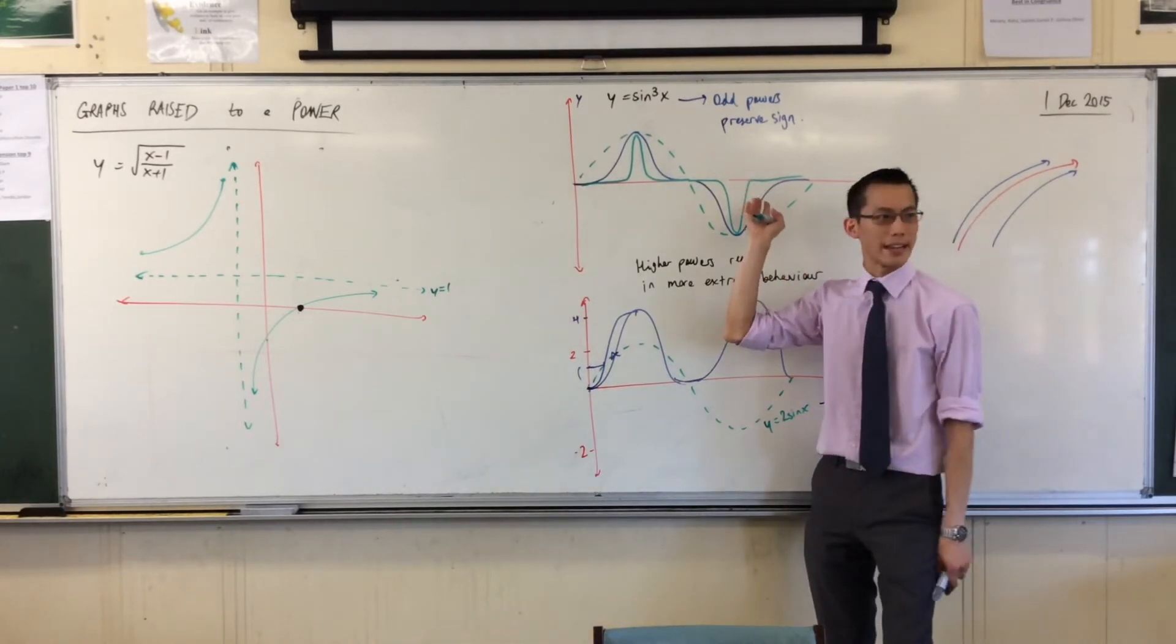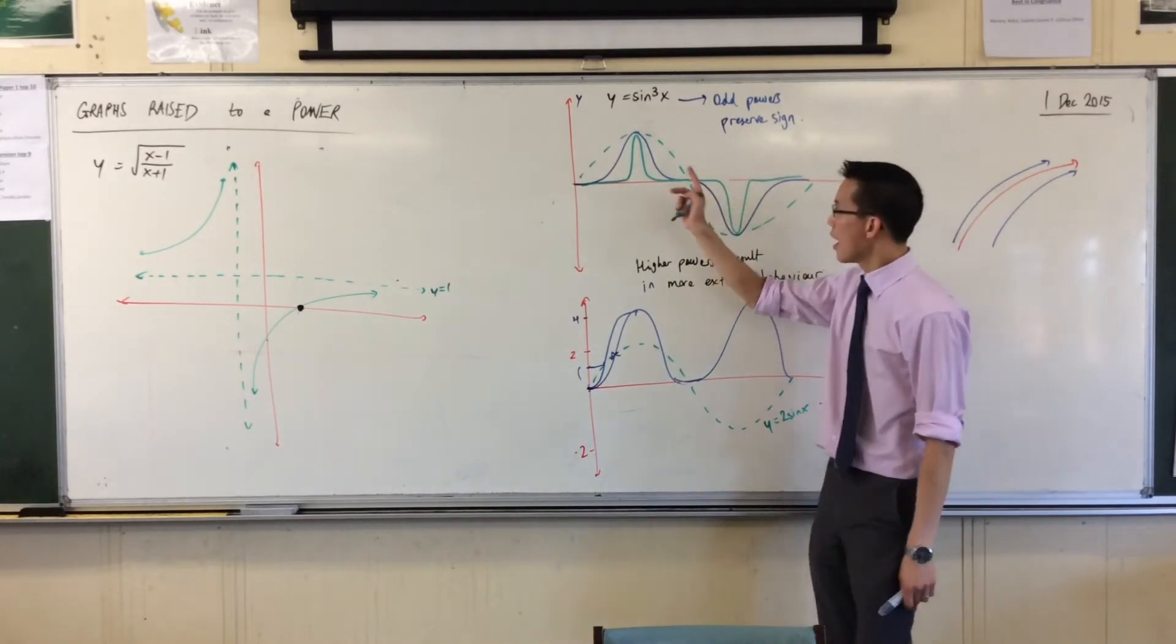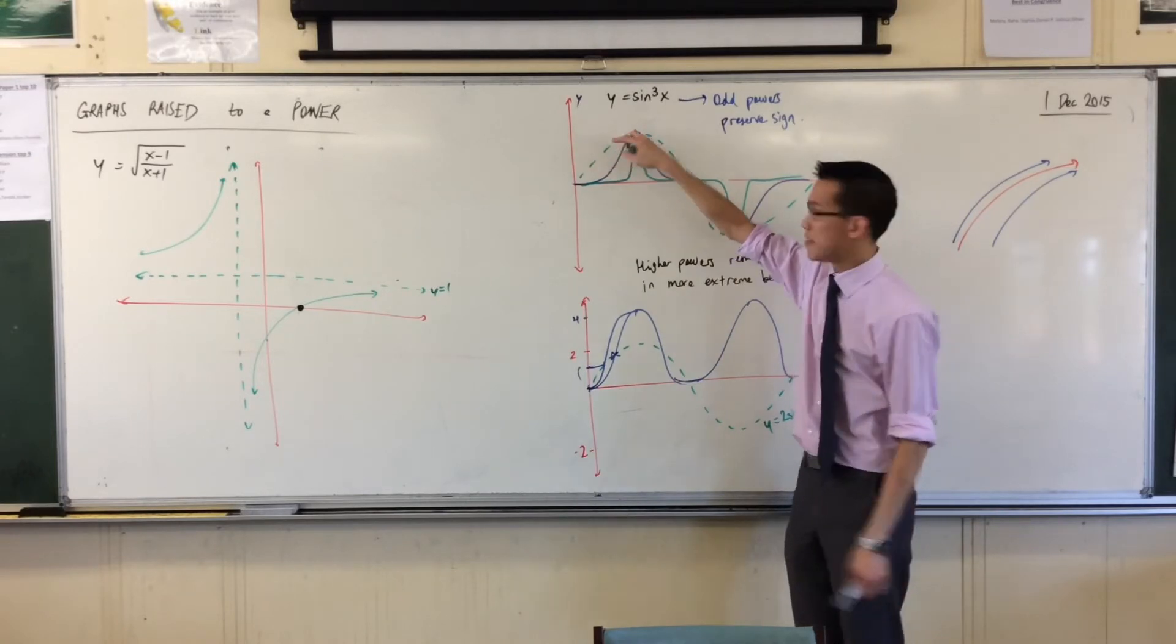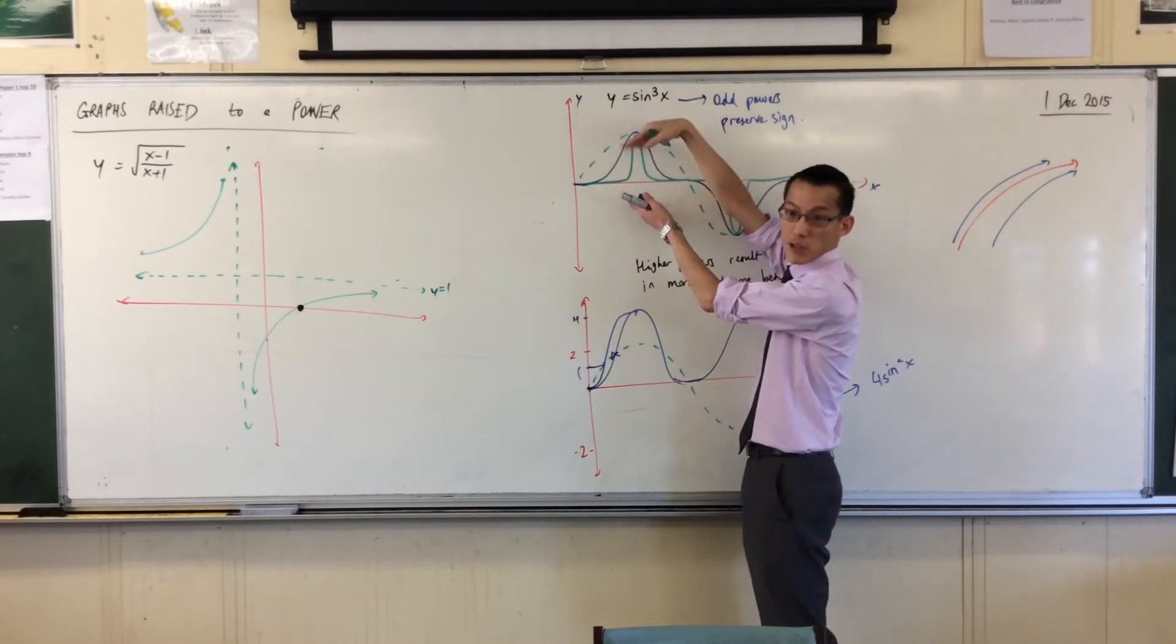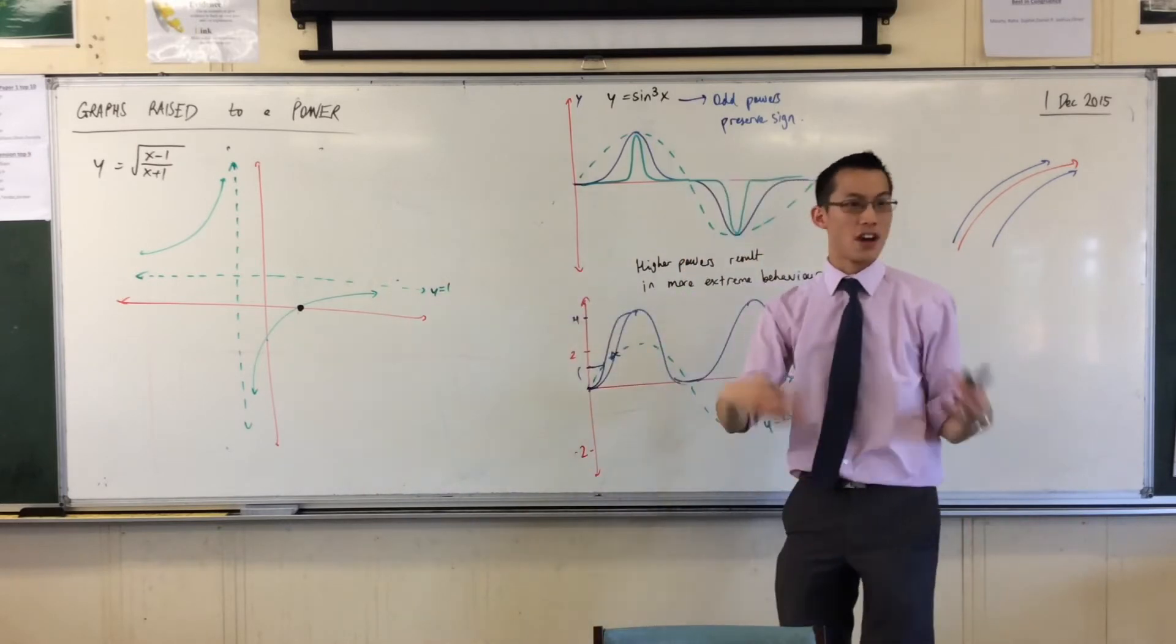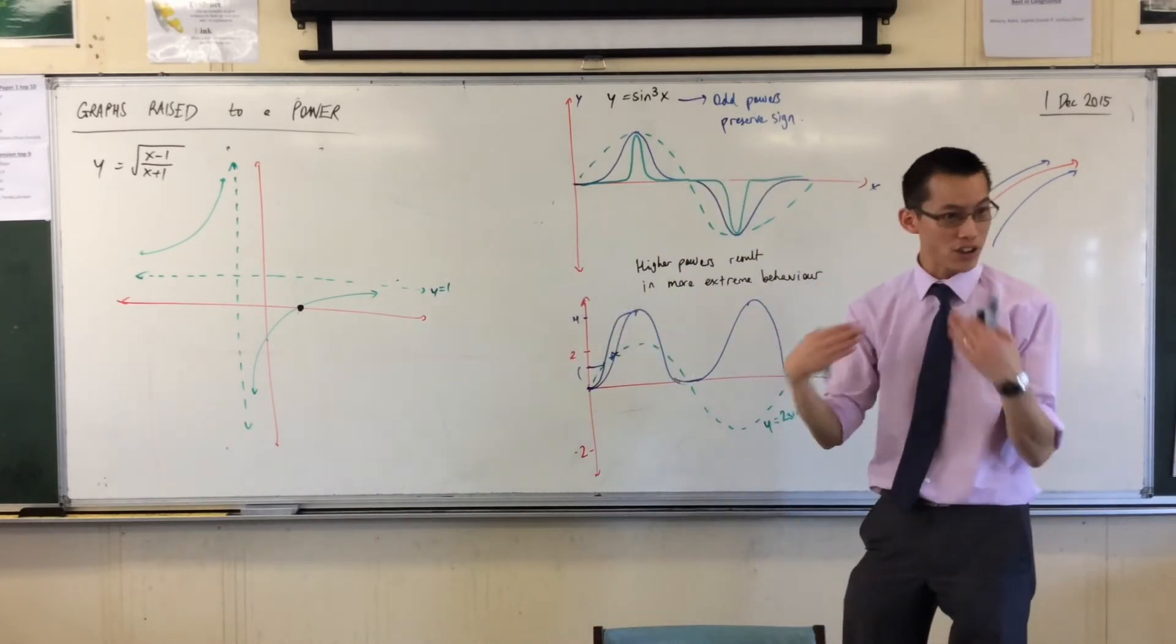Remember when we were looking at squaring and cubing, right? If you're less than one, that makes you closer to, it makes you lower, right? Because, I rubbed it off. Because, you know, nine-tenths or a half and you square it, you get lower.